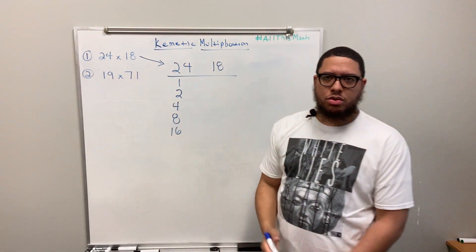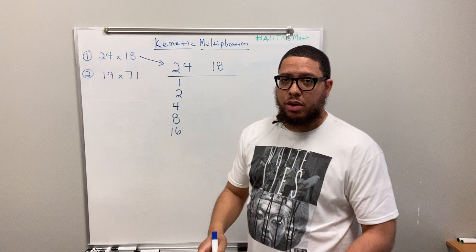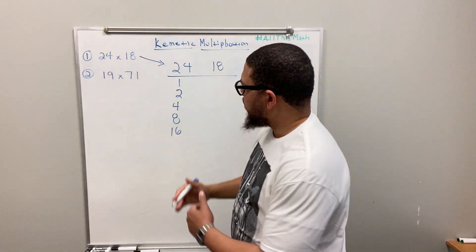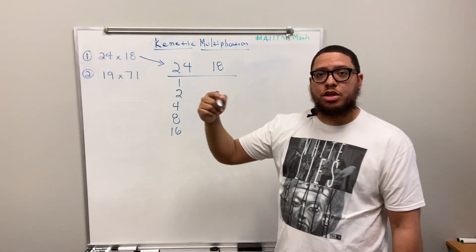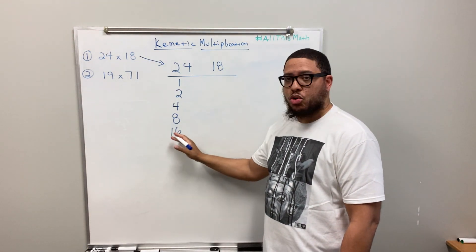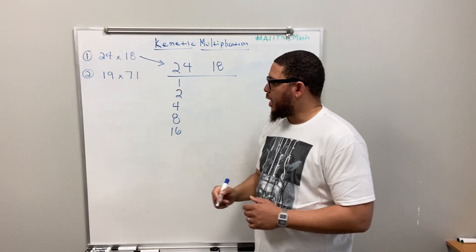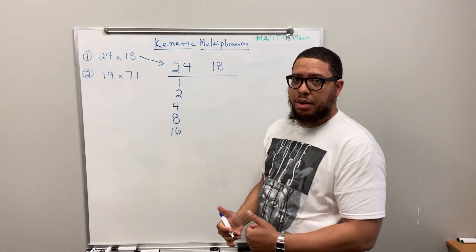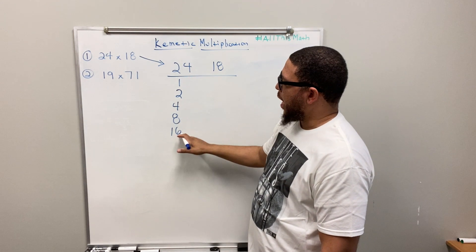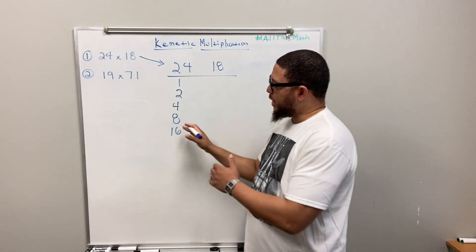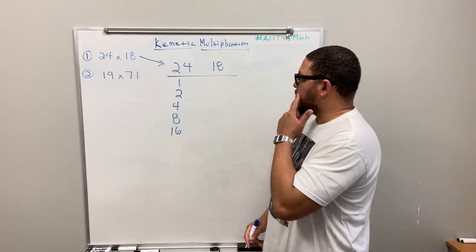You're probably wondering: when do we stop? We stop at 16. Why? Because you don't want to exceed the number you started with. If I double 16 that gives me 32, and 32 exceeds 24. So I stop when I reach the number right before the one that would exceed the original number. Since my original number is 24, I stop at 16.